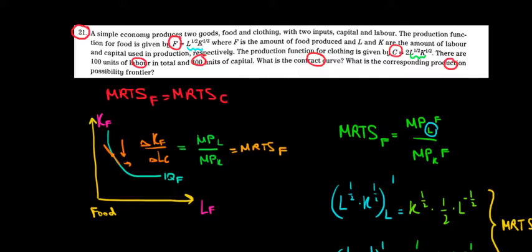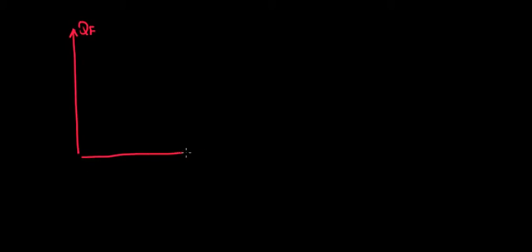To derive the production possibilities frontier — the relationship between the quantity of food and the quantity of clothing in the economy — we need the intercepts first. The intercepts are the maximum amount of food we can produce if we employ all labor and capital in food production, and similarly the maximum clothing if we employ everything in clothing production. Let's do them one by one.